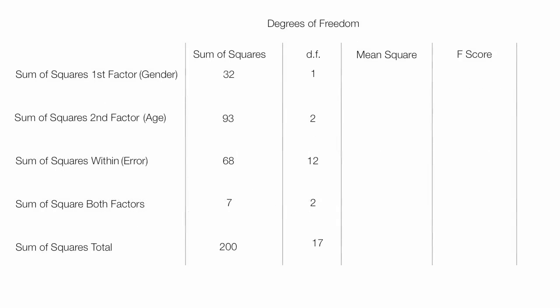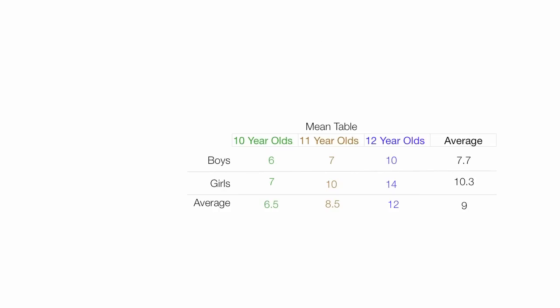In a previous video, I actually calculated all the sum of squares, so if you need to learn that, please check out the playlist. The first thing I want to discuss is degrees of freedom — specifically, the degrees of freedom for the sum of squares of the first factor, gender. So I return to my mean table. I know I described how to derive the mean table in previous videos, but I want to step back and show you how I derive it.